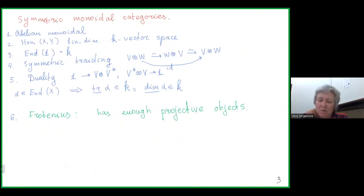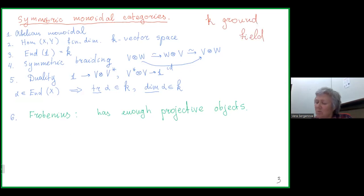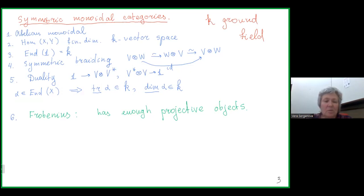Now I am going to explain how these results work for Lie superalgebras, but let me start with some generalities. I'm going to work with symmetric monoidal categories and fix a ground field k. I will not give all the details of the definition; I will talk more about examples. We assume our categories are abelian and monoidal and morphisms between objects are finite-dimensional k-vector spaces.